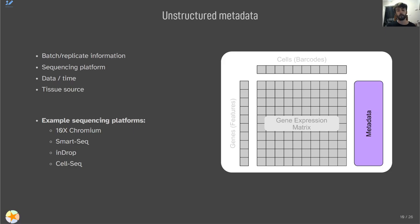Our final component is the unstructured metadata — basically any metadata that doesn't belong to a specific cell or gene. This could be information about different batches or replicates, the different sequencing platforms used to sequence this data, as well as dates or times the data was generated, and things like tissue source. There are a couple of examples of sequencing platforms shown here, which you may find in the metadata.